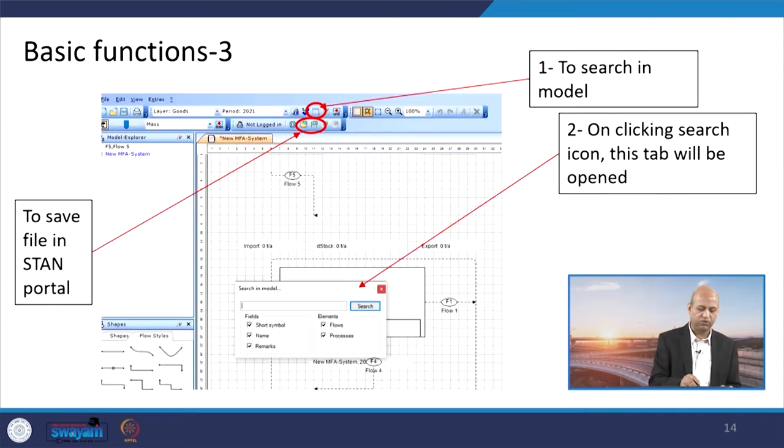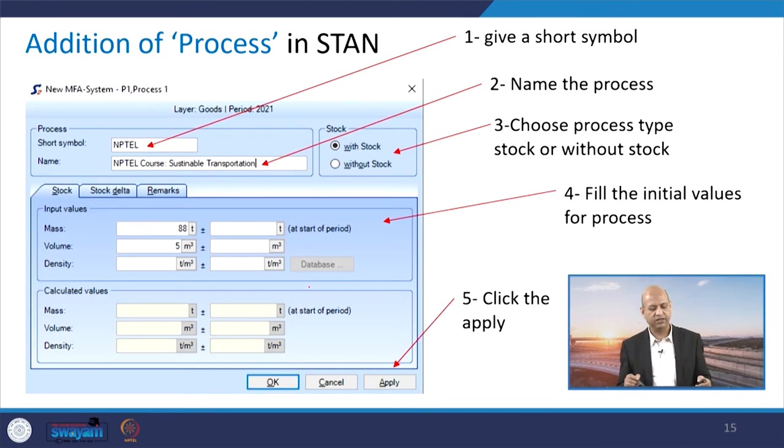Similarly, when we talk about saving, these are the buttons which can be used for saving. Then these different shapes are there which can be used if you want to search. For example, you have done all kinds of things you want to search, there is a search button and you can see whether symbols related search or name related or remarks or flows, all kind of possibilities are there.